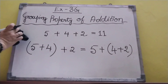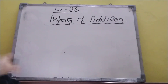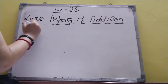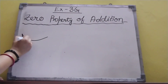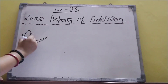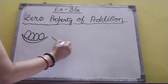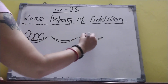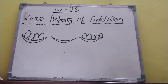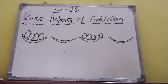Now the third is zero property of addition. Suppose, how many of you have eaten rasgullas? Do you love to eat rasgullas? In one plate, four rasgullas. Another plate is empty. And another plate has five rasgullas. We will be putting all rasgullas into one plate.